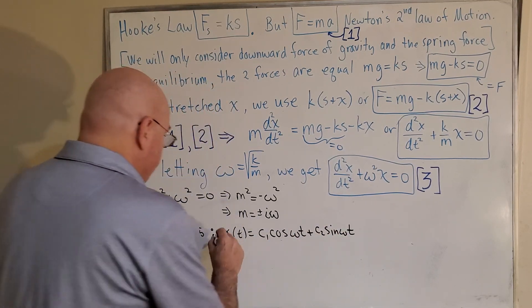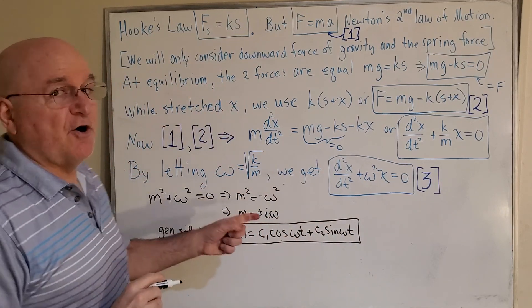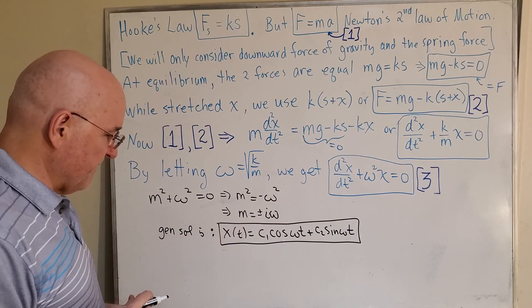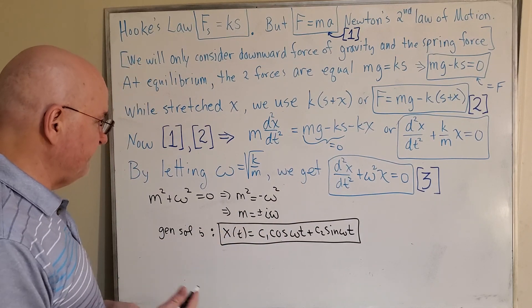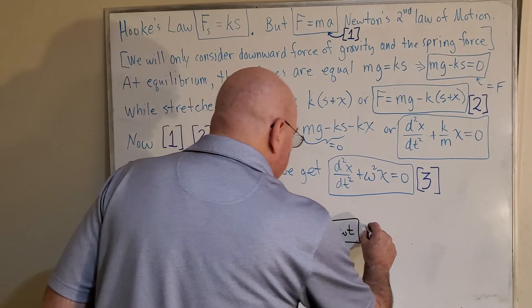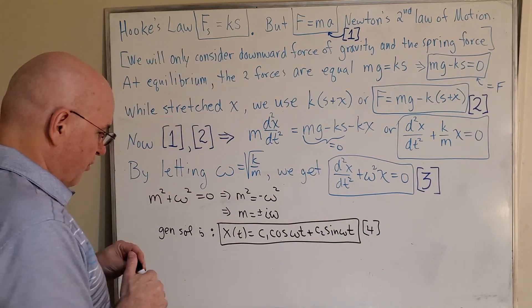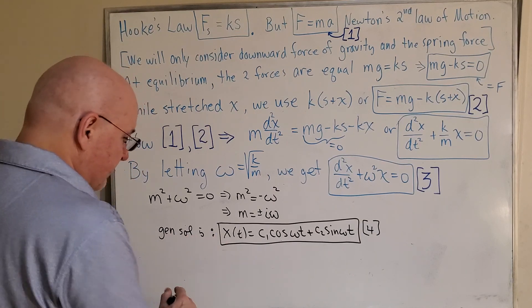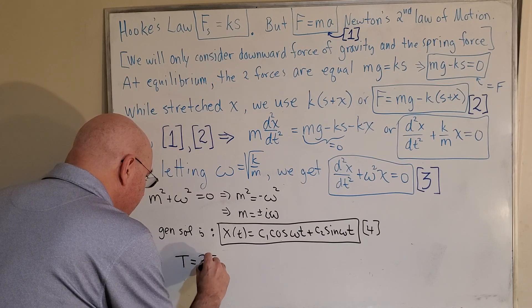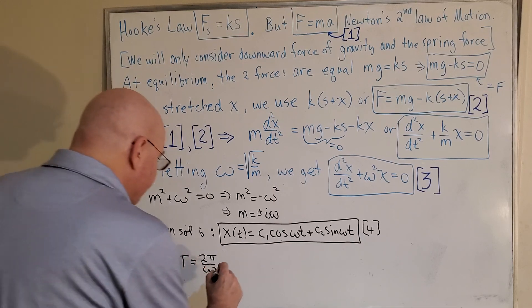So it's not hard to get from this differential equation to this, but you could just memorize this and it might make life easier. So in this equation, if I had more room, I was going to call this equation four and then state a few things about equation number four. I'm going to squeeze them in down here. But T, capital T equals 2π divided by ω is the period of motion.